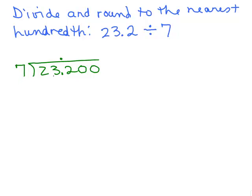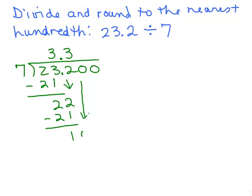So we have 7 into 23 goes 3 times and bring down the next digit. 7 goes into 22 three times. And again we subtract. Bring down the next digit. 7 goes into 10 once.